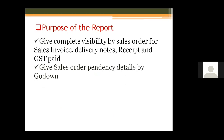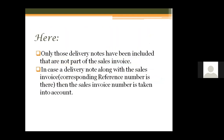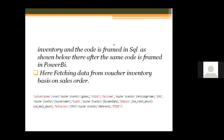The overall benefit is minimizing the number of pages — the data comparison is so strong it can convert a hundred-page report to a one-page report. The purpose of this report is to give complete visibility by sales order for sales invoice, delivery notes, and receipts by go down page. The data has been taken from the voucher inventory table, the code is framed in SQL, and the same code is framed in DAX, fetching data from the voucher inventory on the basis of sales.